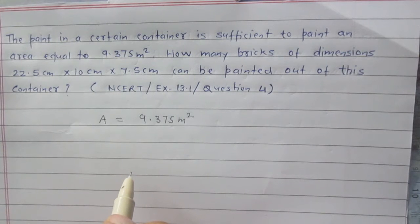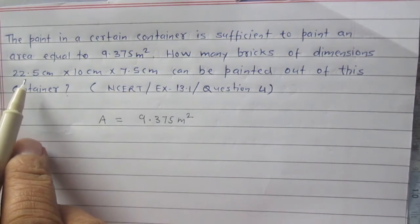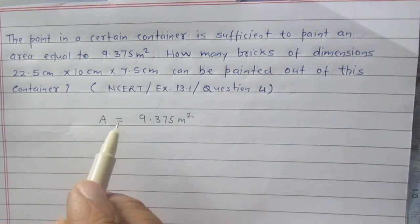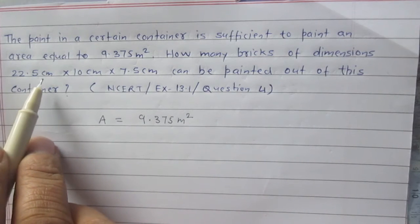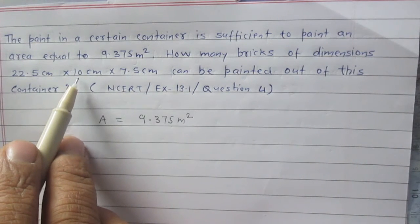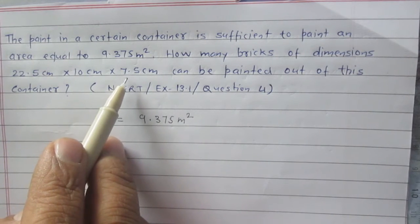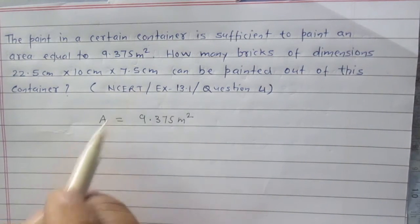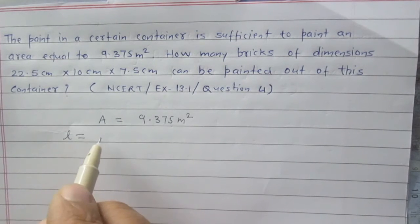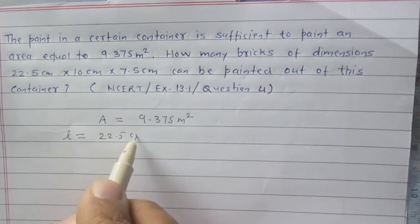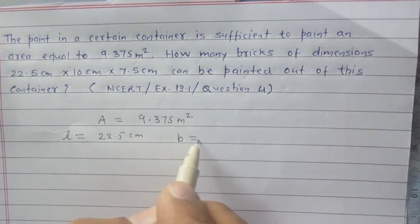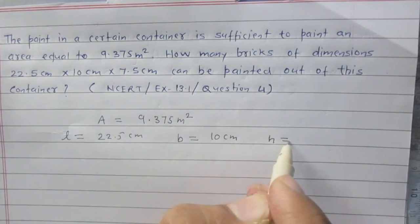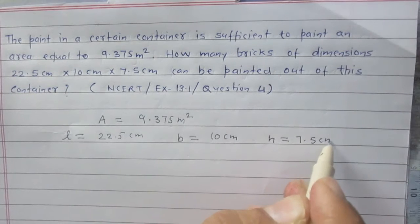The dimension of a brick is 22.5 cm × 10 cm × 7.5 cm. The length of the brick is 22.5 cm, the breadth is 10 cm, and the height is 7.5 cm. So this brick is a cuboid. Let L be the length = 22.5 cm, B be the breadth = 10 cm, and H be the height = 7.5 cm.